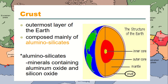What do we mean by crust? Crust is the outermost layer of the earth — that's mostly where we live. It is composed mainly of alumino silicates, which is a mineral containing aluminum oxide and silicon oxide.